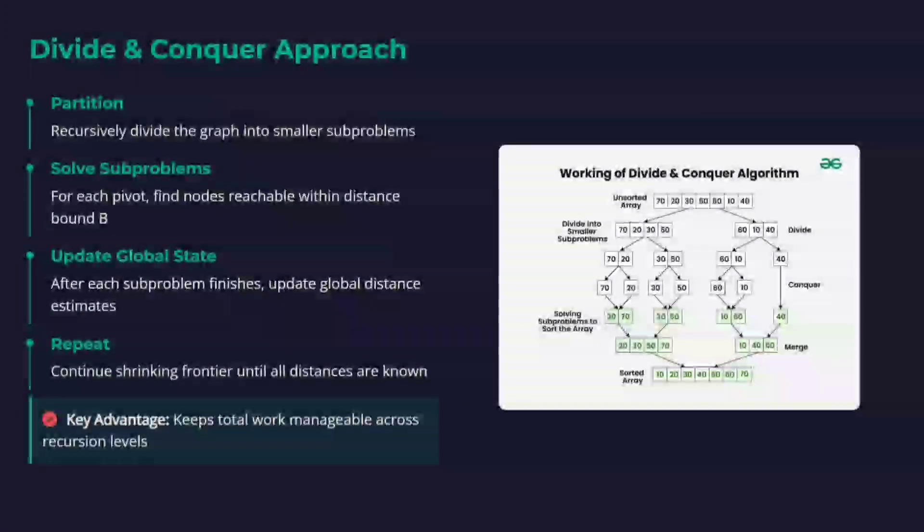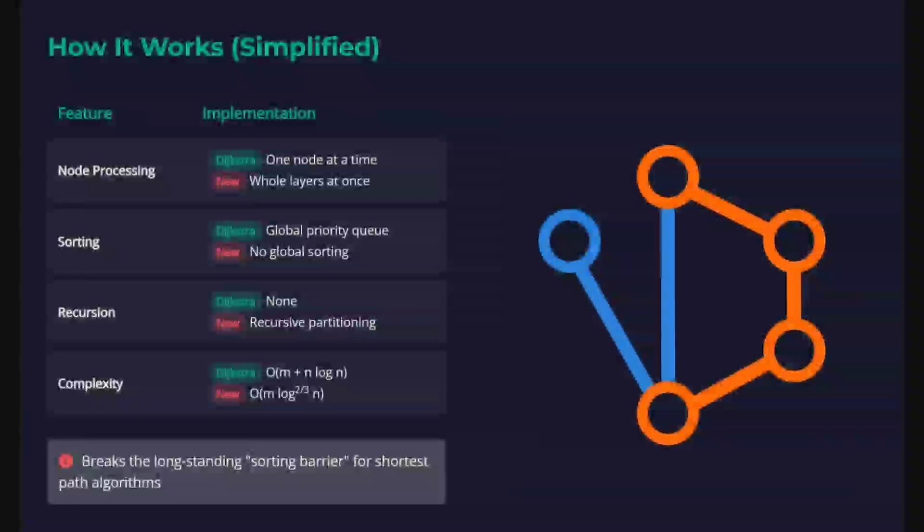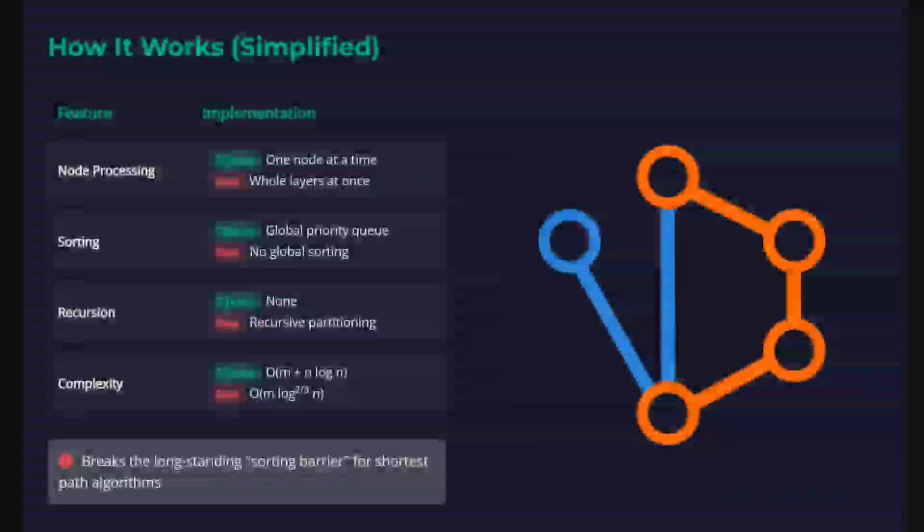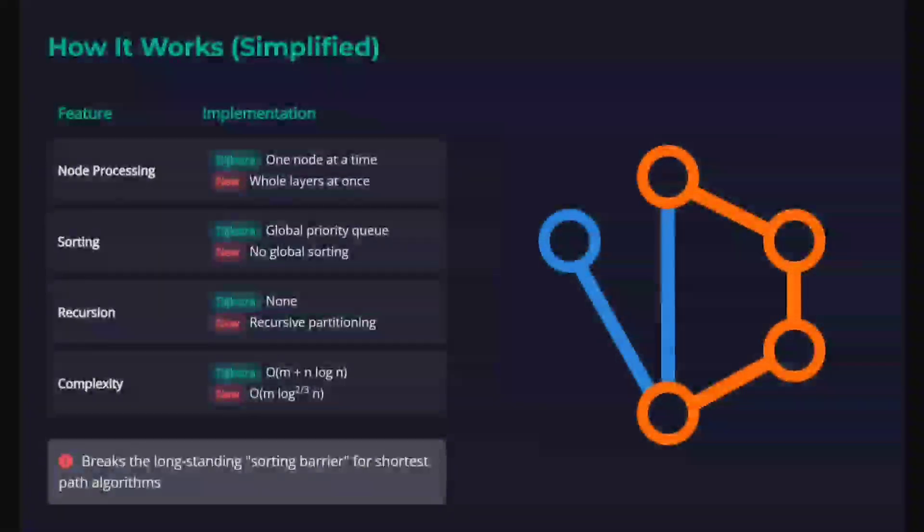There are multiple differences between Dijkstra and the new algorithm. Dijkstra operates one node at a time, while the new algorithm works at layers, operating with multiple nodes at a time. Dijkstra has a priority queue, while in the new algorithm there is no sorting required. It is recursive in nature, and as you can see, in the end, the time complexity also changes.